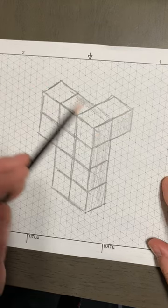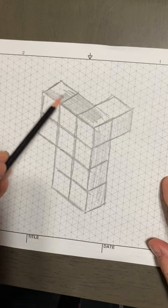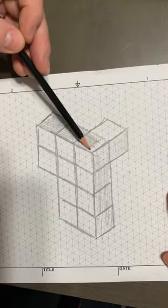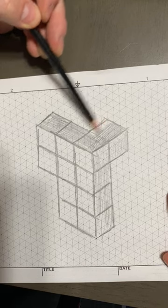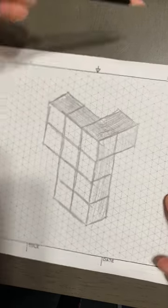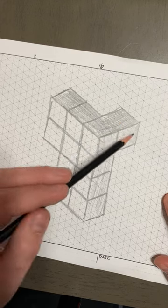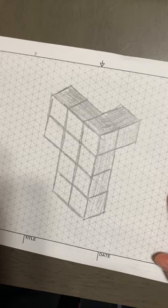And the top, I'll make a dark shade. So we have these four facing the top, these five facing the side, and these 10 facing the front.